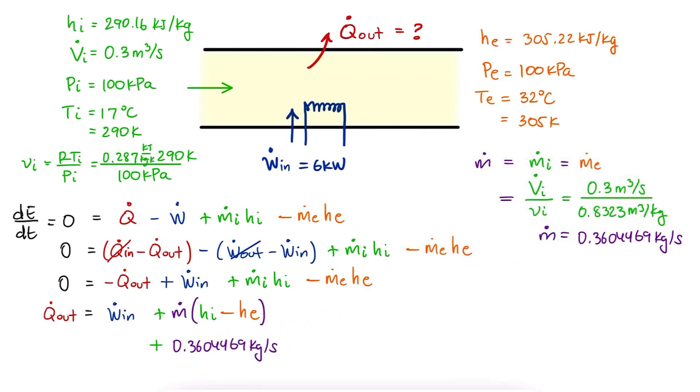We substitute all values, including the given power, or work rate, and find that the heat lost is 0.572 kilowatts.